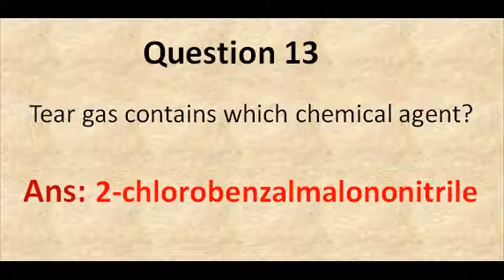The next question is: tear gas contains which chemical agent? The answer is 2-chlorobenzylmalonitrile.